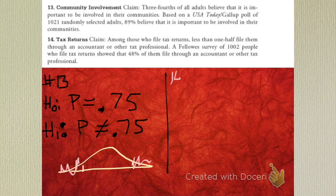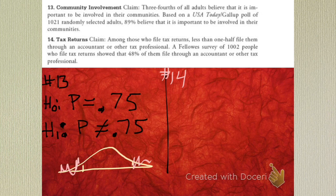Let's look at number 14. Tax returns. The claim is, among those who file returns, less than one-half of them file through an accountant or other tax professional. So we can set up our H-naught. What's their claim? There's a directional word in there. P, because it's a proportion. Their claim: P is less than 0.5. That's their claim.